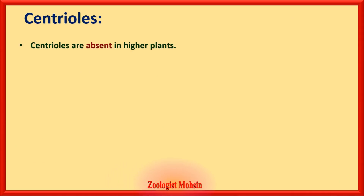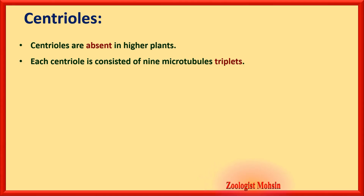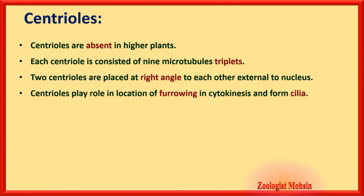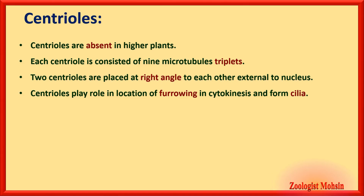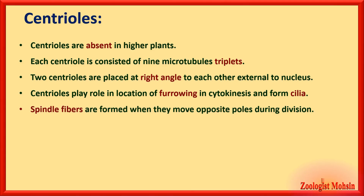Centrioles are absent in higher plants — an important fact. Each centriole consists of nine microtubule triplets, meaning each of the nine microtubules is further made of three tubules. Two centrioles are placed at right angles to each other, external to the nucleus. Centrioles play a role in locating the furrow in cytokinesis, form cilia, and spindle fibers are formed when they move to opposite poles during cell division.